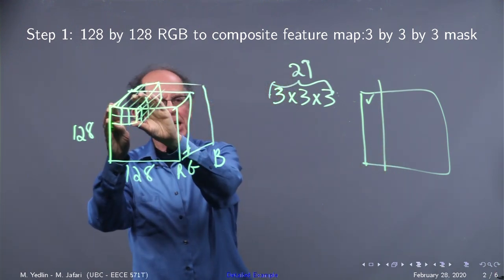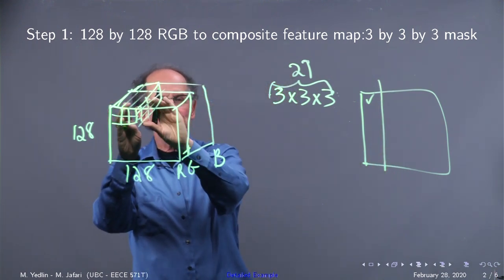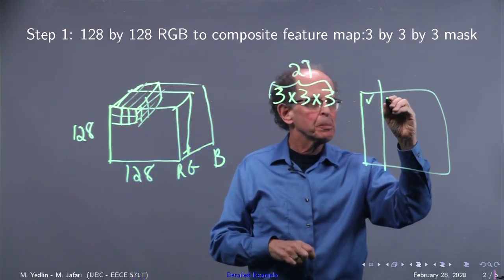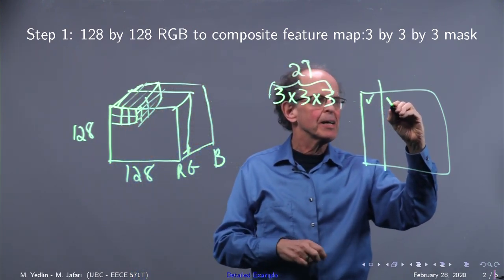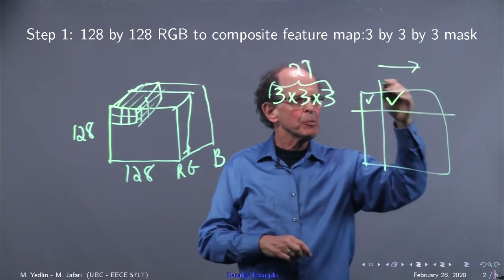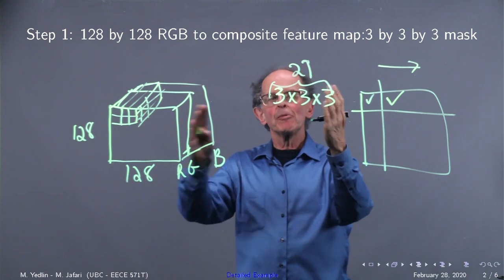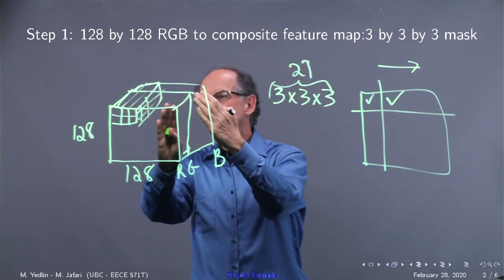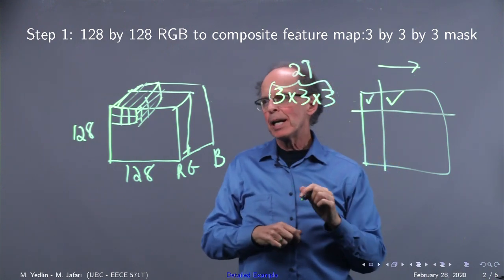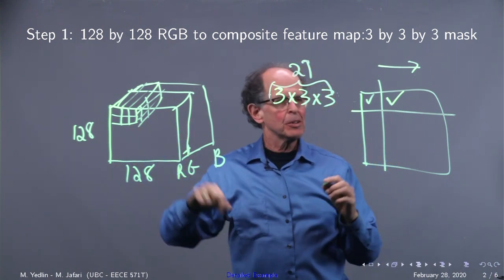Then we're going to shift this block over by 1. That's a stride of 1. Repeat the shift, multiply, add 27 times, add the result, and there. Then we'll continue. When we're all done, remember every time we shift and do the multiply adds, we get one number out. So how many times are we going to do this?